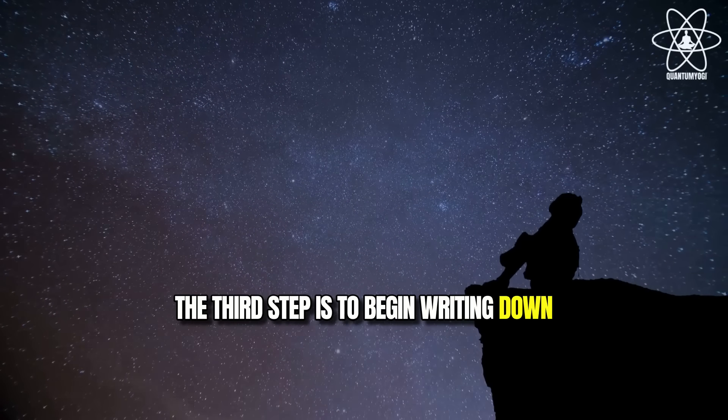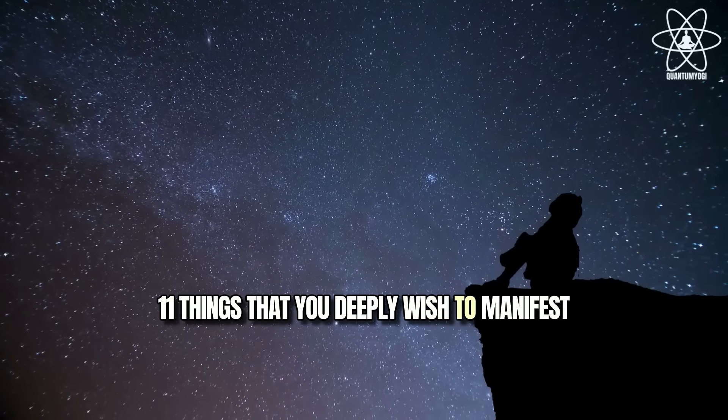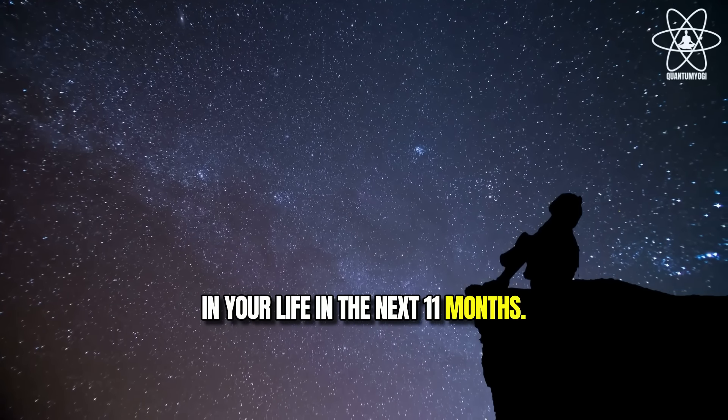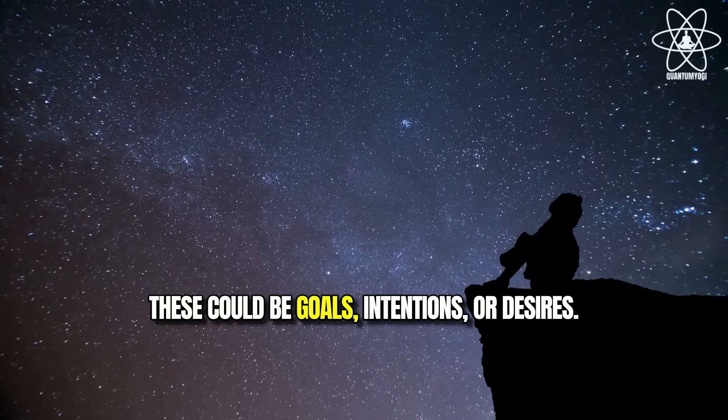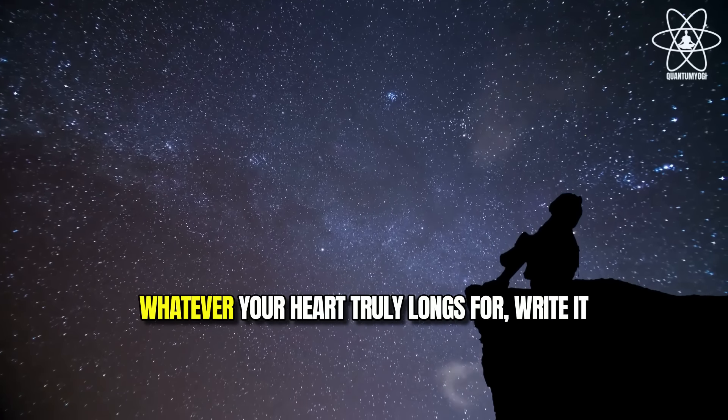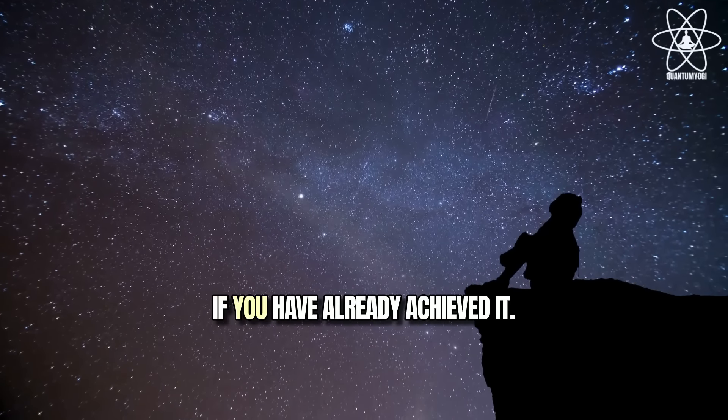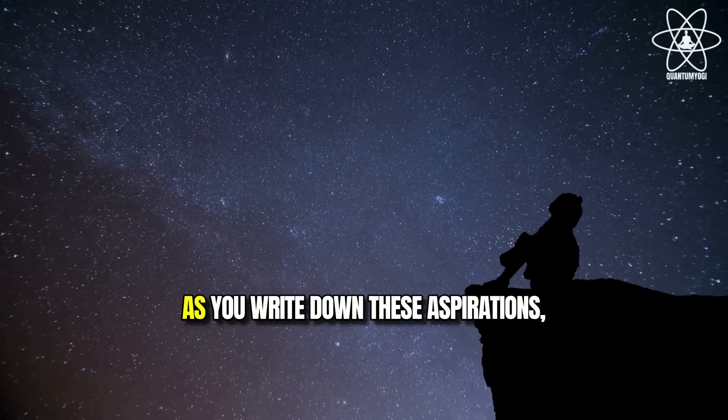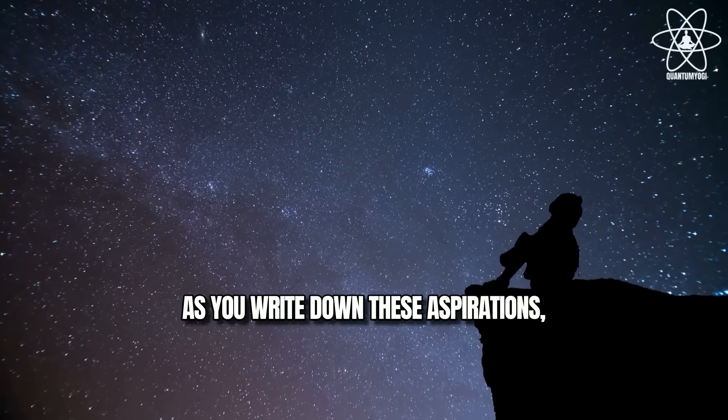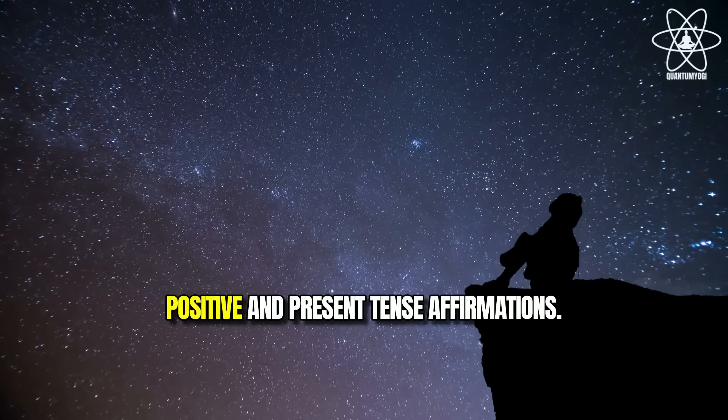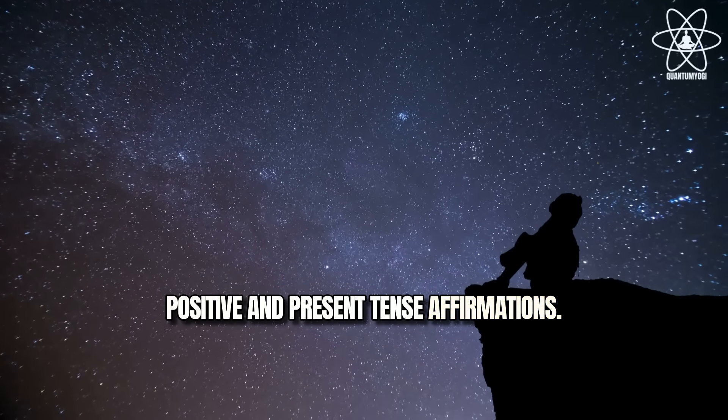The third step is to begin writing down 11 things that you deeply wish to manifest in your life in the next 11 months. These could be goals, intentions, or desires, whatever your heart truly longs for. Write it down in the present tense and feel as if you have already achieved it. As you write down these aspirations, it's recommended to frame them in positive and present tense affirmations.